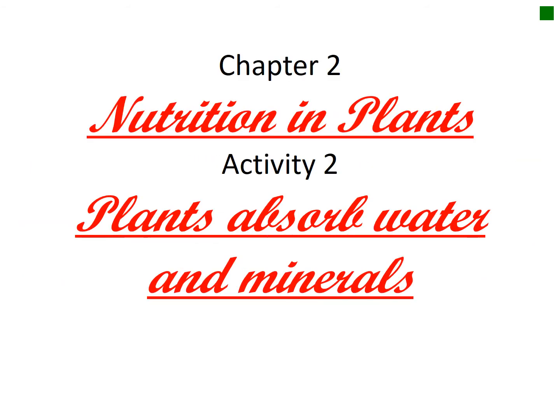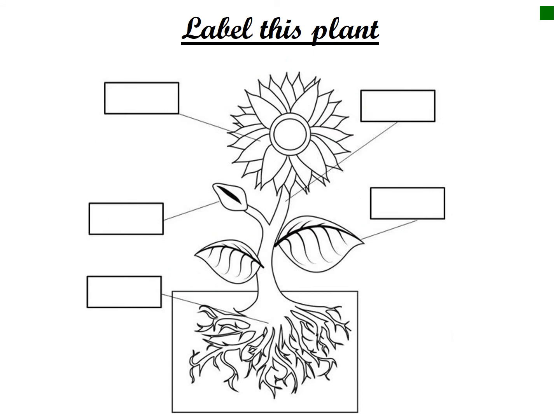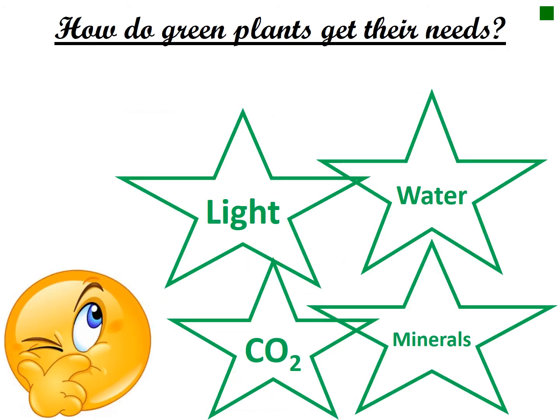Chapter 2, Activity 2: plants absorb water and minerals. You need to know the parts of a plant: leaves, stem, buds, roots, and root hairs. How do green plants get their food and their needs?